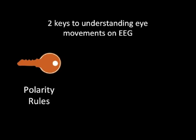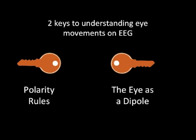There are two main keys to understanding eye movements on EEG. The first key is to understand the polarity rules, which have been discussed in a previous video. The second key is to understand the eye as a dipole.